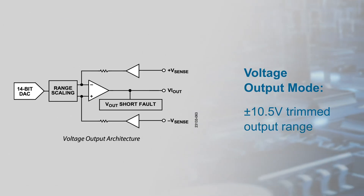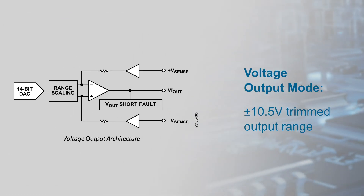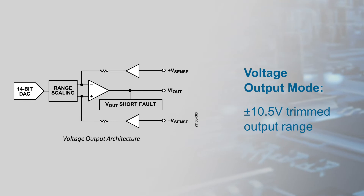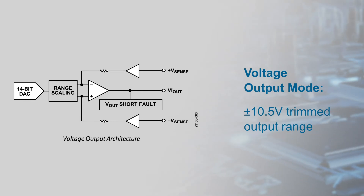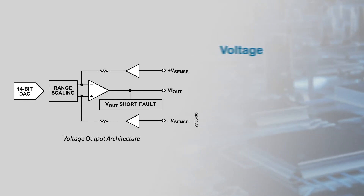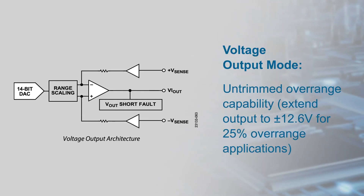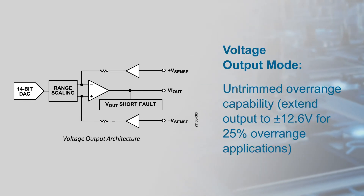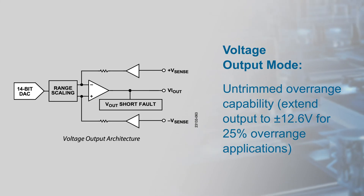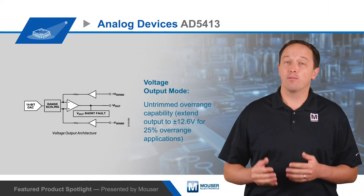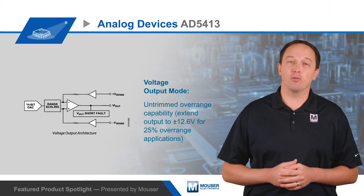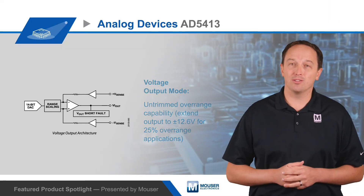In Voltage Output Mode, the AD5413 has a ±10.5V trimmed output range, with an untrimmed overrange capability that extends the output voltage to ±12.6V for 25% overrange applications.